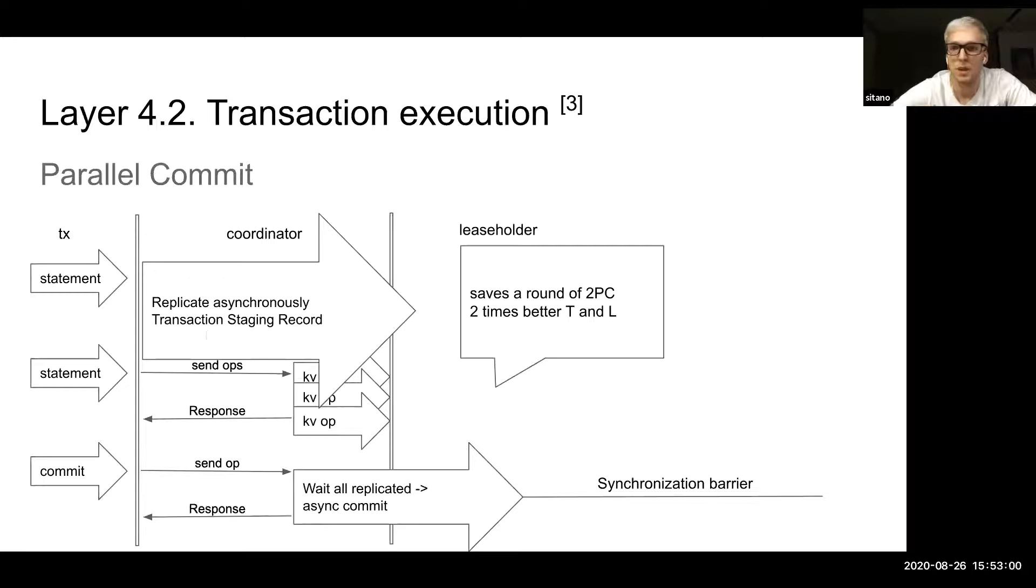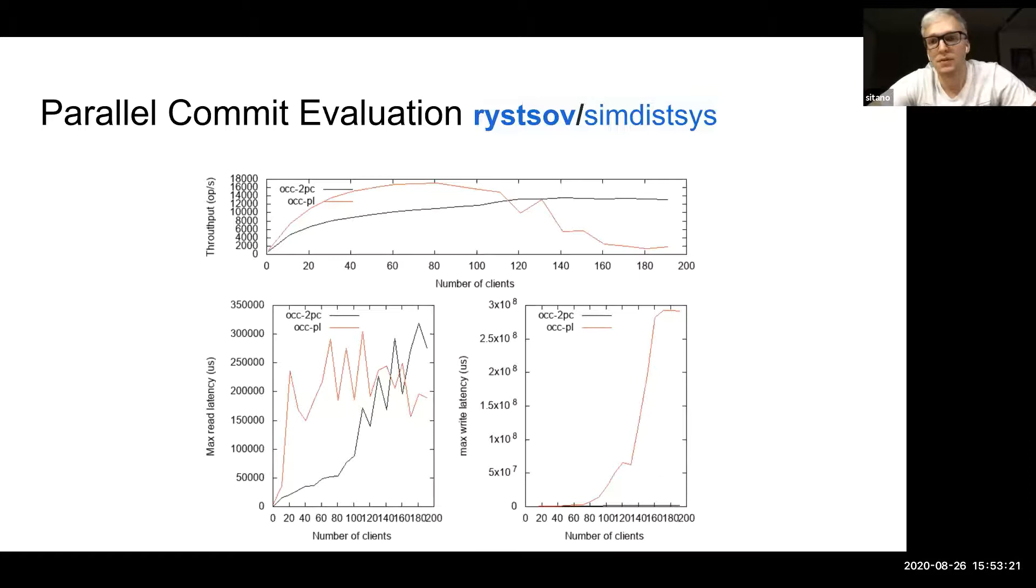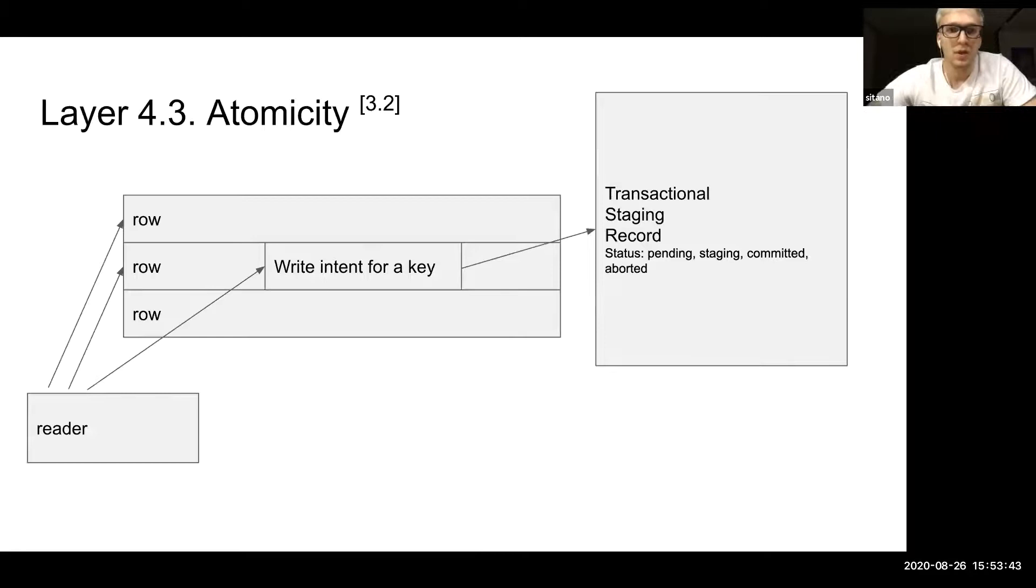In that sense, the transaction may be committed in one round trip, considering that usually the commit itself and the read or write operation are usually joined together. Denis Rostov also wrote parallel commit evaluation tests on his GitHub. He compared the parallel commit to two-phase commit. Here you can see some results and there is source code in C# if you're interested.